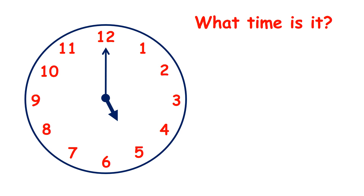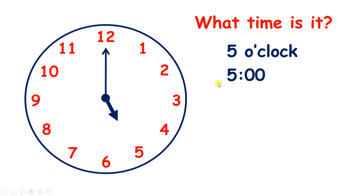So what time is it now? The hour hand is pointing to 5, and the minute hand is pointing to 12, which means it's o'clock — so it's 5 o'clock. Or on a digital clock, you might see 5:00. You always have two zeros when it's o'clock.